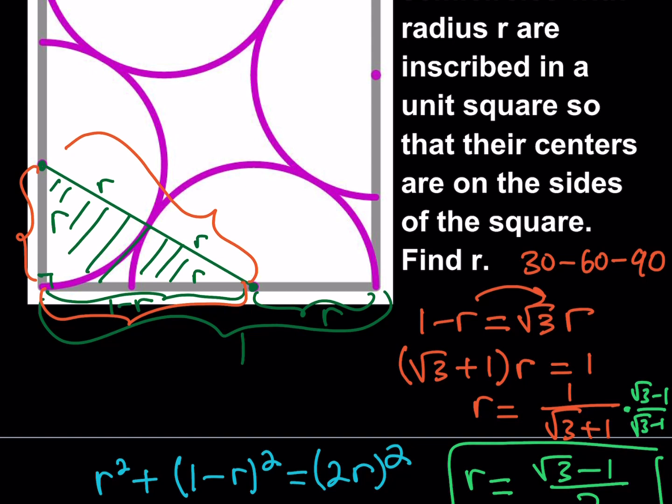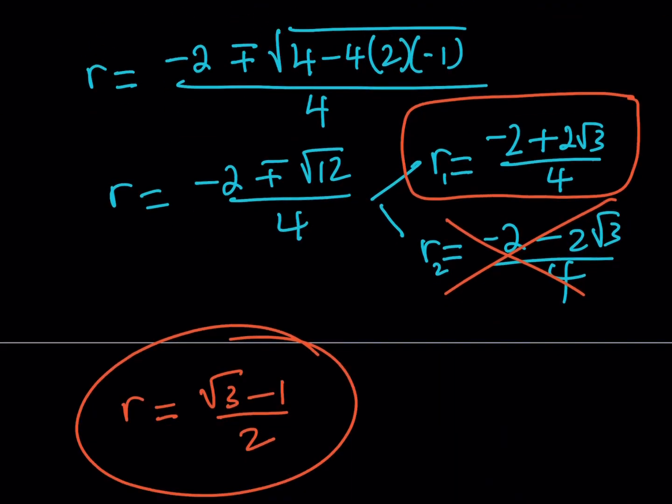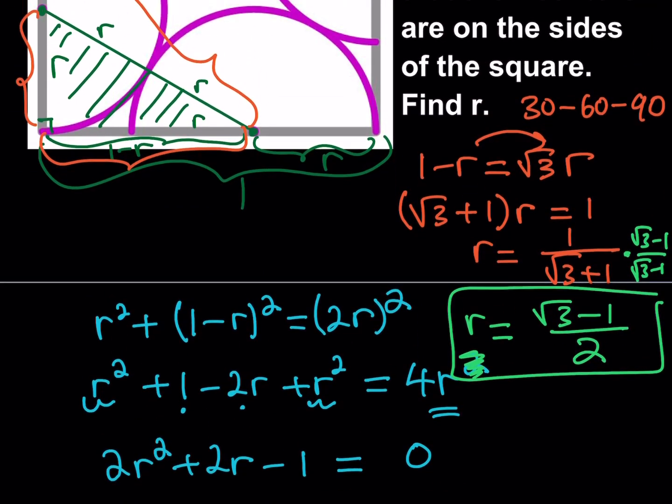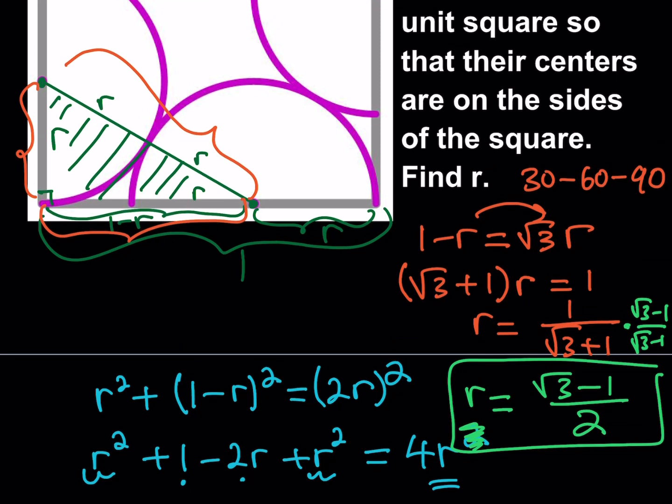Basically we got the same answer from two different methods and this is easier because as soon as you see that property 30-60-90 you should definitely go for it. I just wanted to show you the alternative methods so this brings us to the end of this video.